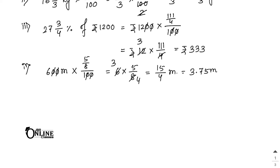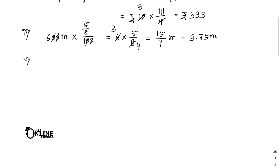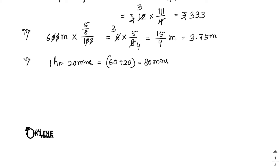Number 5: 6½% of 1 hour 20 minutes. First convert 1 hour 20 minutes to minutes: 1 hour = 60 minutes, so 60 + 20 = 80 minutes. Now 6½ as an improper fraction is 13/2, so we need 13/2 percent of 80 minutes.